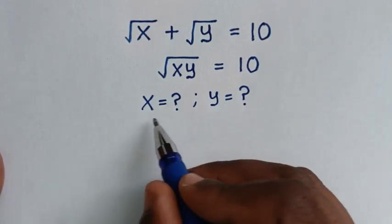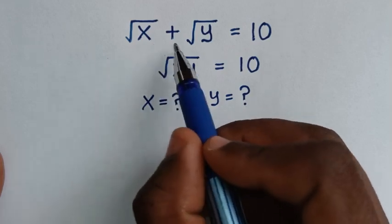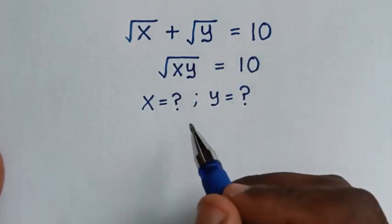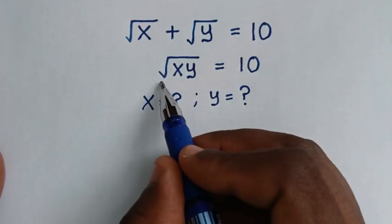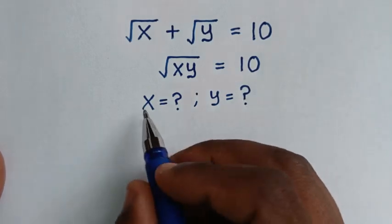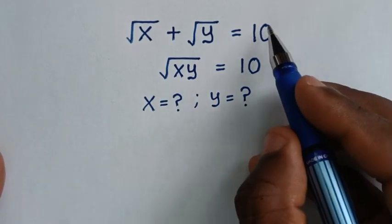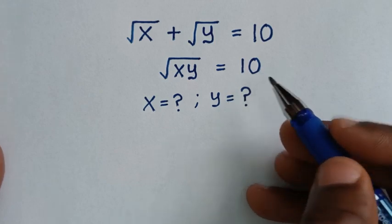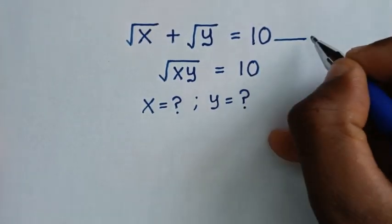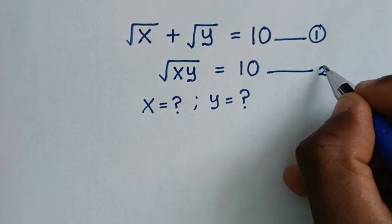Welcome. Solve this math problem: the square root of x plus the square root of y is equal to 10, and the square root of xy is equal to 10. We need to find the values of x and y from these two systems of equations. Let's start — we'll label the first equation as equation 1 and the second as equation 2.